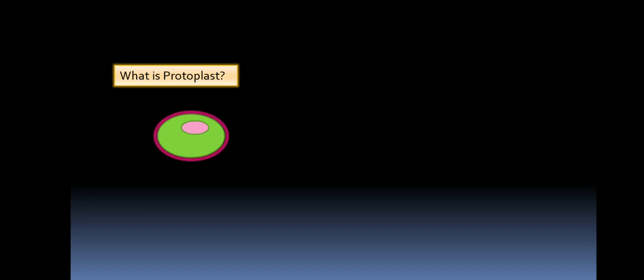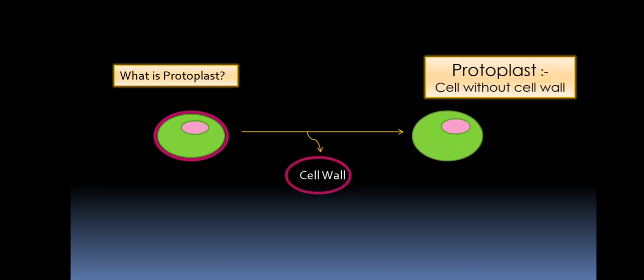We are going to see protoplast fusion. First we need to understand what is protoplast. We know the cell, generally the plant cell, is having a cell wall. And when the cell wall is removed, the remaining part is called the protoplast. Cell without cell wall, that is protoplast. This doesn't apply to animal cells because animal cells don't have cell walls. So we cannot remove what is not there. This happens with plant cells.